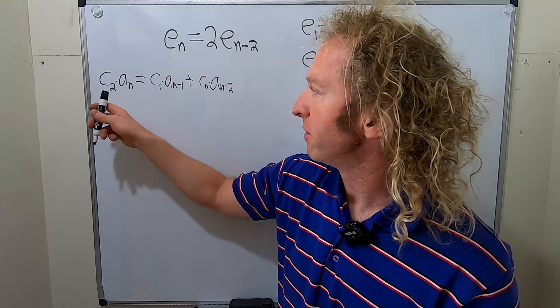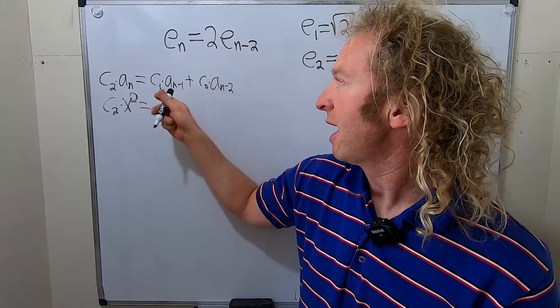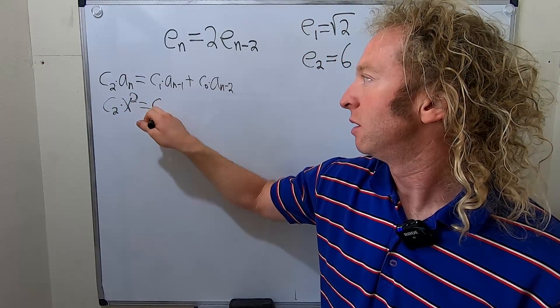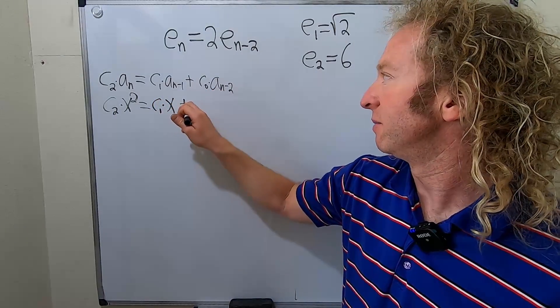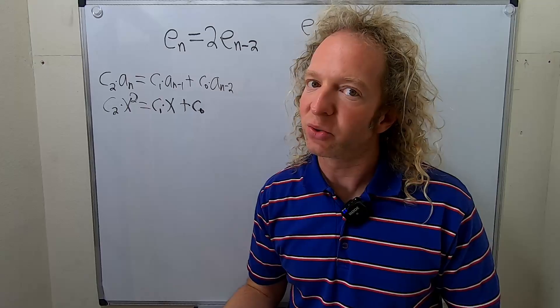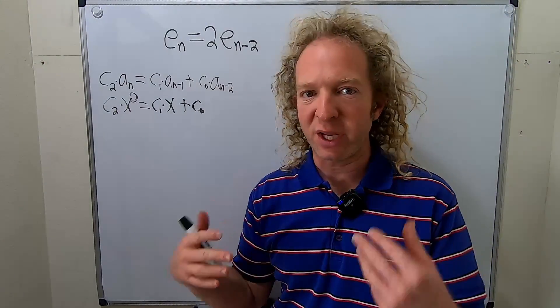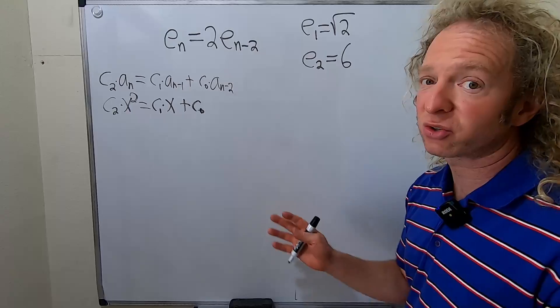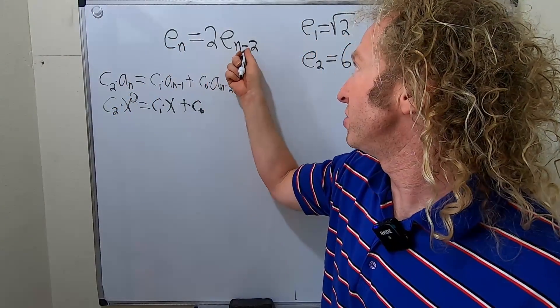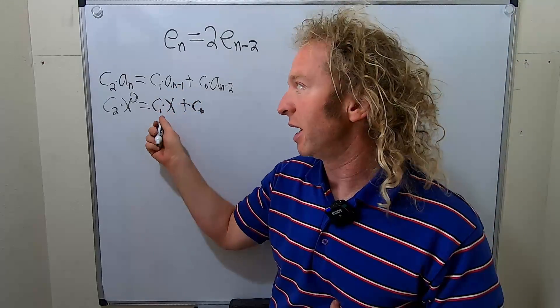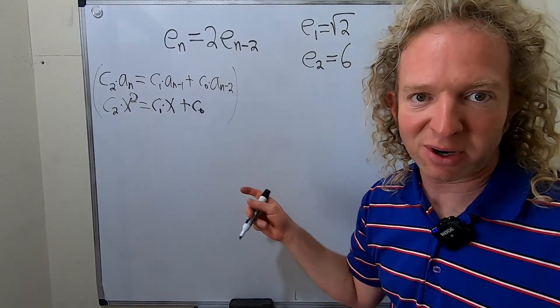It comes immediately from this. Basically, whenever there's an n, you just put an x squared, and whenever there's an n minus 1, you put an x. Whenever there's an n minus 2, it's just a constant. So this is something you just memorize. Different books use different notation. It just varies greatly. So I just memorize it. Whenever it's an n, it's an x squared. Whenever it's n minus 2, it's a constant. When it's n minus 1, it's an x. Okay, so this is called the characteristic or auxiliary equation.